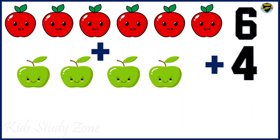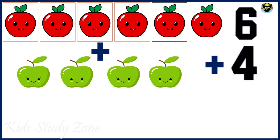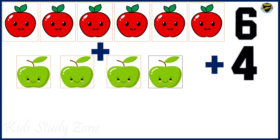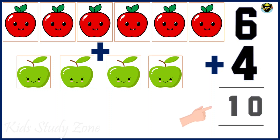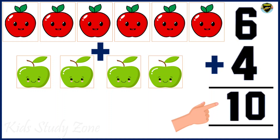Children, this is very important. You all must know the sign of addition. Now we will add these two numbers. Let's count red apples and green apples: 1, 2, 3, 4, 5, 6, 7, 8, 9, 10. So we have total 10 apples.